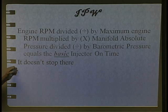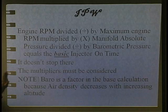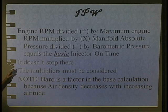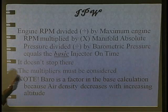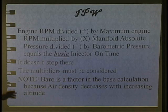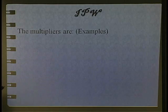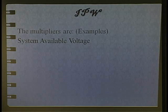Because it doesn't stop there — the multipliers have to be considered. Note: barometric pressure is a factor because of altitude. The multipliers are, as an example, system voltage.